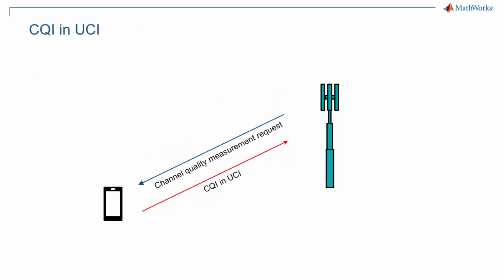The second type of UCI content is CQI or channel quality indicators. Such information is transmitted in response to a request from the gNB. This request can be a one-time request, a semi-periodic, or a periodic request, as shown in more detail in another episode of this 5G Explained series about channel sounding.